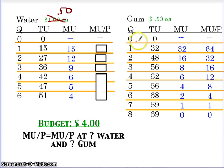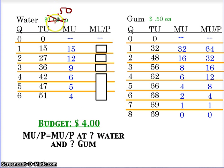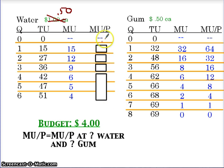Using ceteris paribus, gum is unchanged — we're not messing with gum, we're going to hold that constant. The budget is unchanged — we're going to hold that constant. The only thing we're going to change is the price of water. Notice the total utility column is the same as it was before; we're not messing with our levels of satisfaction, just the price tag. Since our total utility is the same, the marginal utility also remains the same.